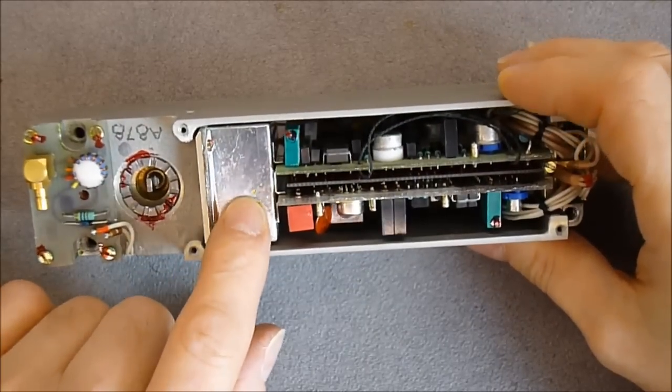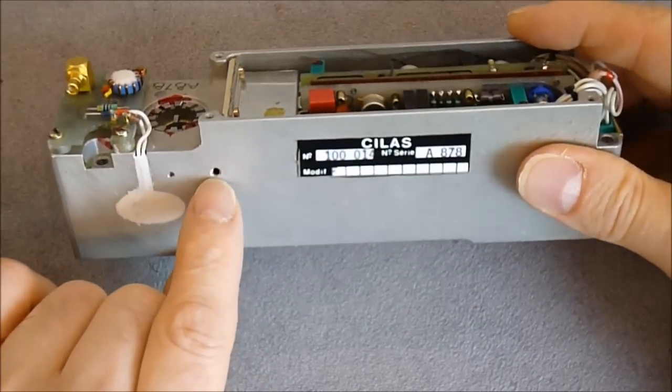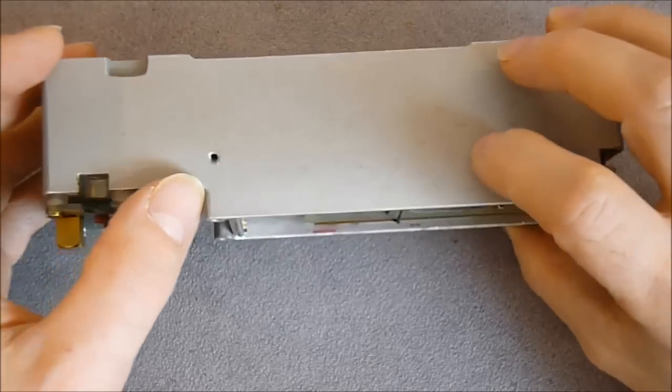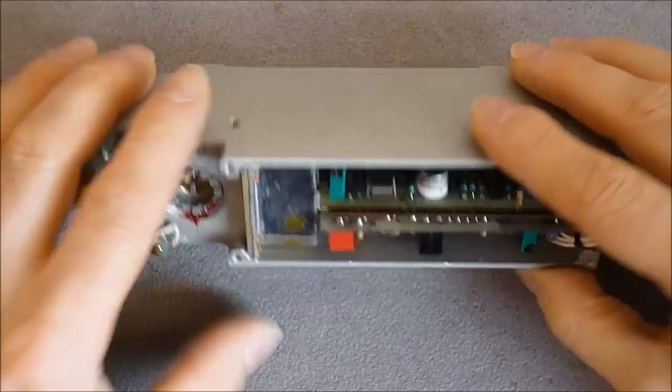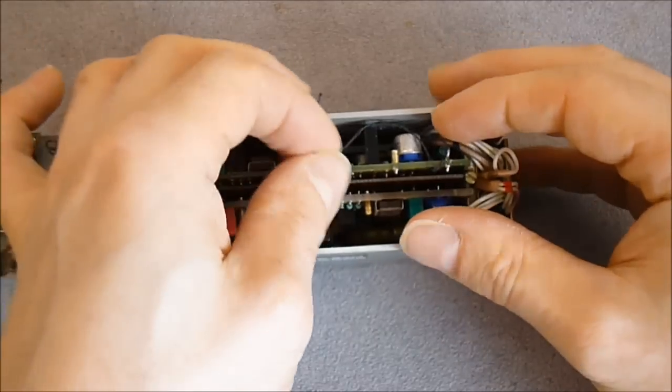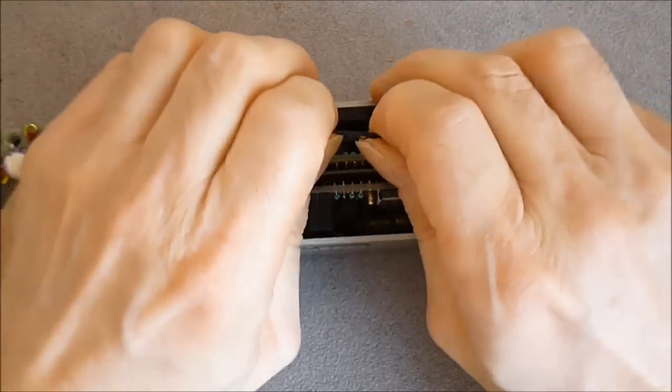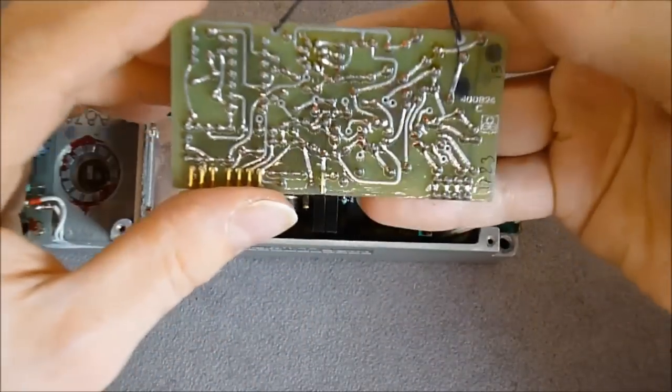So it seems this metal box is attached with set screws. Luckily these ones are not stuck. So I will be able to remove them. So if I pull here, first PCB.